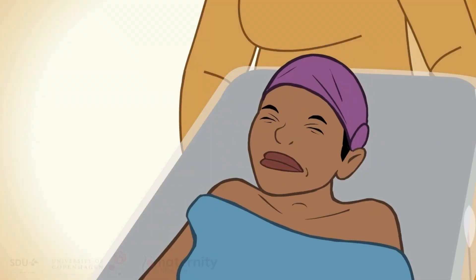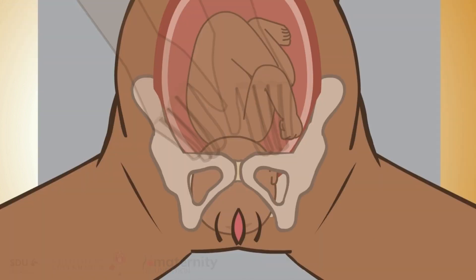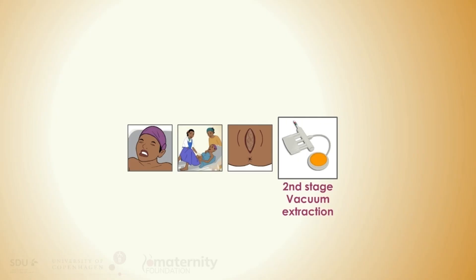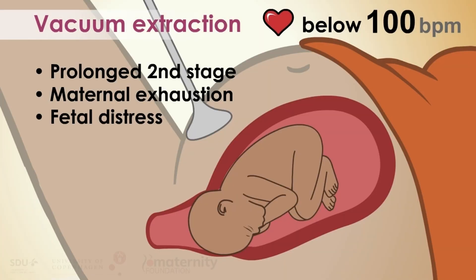Pushing is the most stressful and dangerous part of labor. At strong contractions, pushing should not last for more than one hour. If cephalic presentation and the head is not palpable more than one-fifth over the pubic bone, a vacuum extraction could be attempted after one hour. Vacuum extraction is a basic emergency obstetric and neonatal care signal function and should be mastered by any skilled birth attendant. The most important indications are prolonged second stage, maternal exhaustion, and fetal distress.